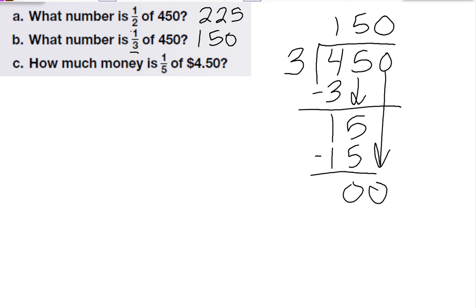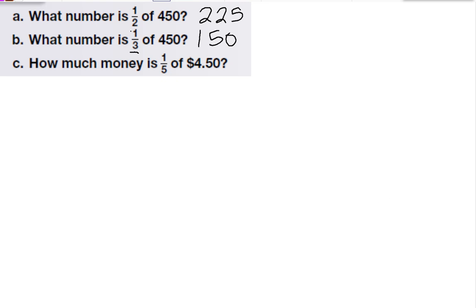I can also do this with money. So here I have what is 1 fifth of 4 dollars and 50 cents. Again, I'll take my number, so 4 dollars and 50 cents, and divide it by the denominator, 5.